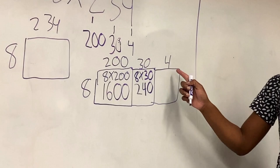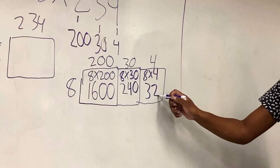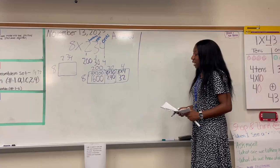Now you have your last one, eight times four. I'm going to write that in here. Eight times four is 32. Remember, you can use your multiplication chart to figure this out.